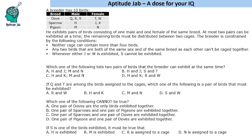Hello everyone, welcome to Aptitude Jab. This is a set based on selection. A breeder has 10 birds of three breeds, with male and female birds of each breed. He exhibits pairs of birds consisting of one male and one female of the same breed. At most two pairs can be exhibited at a time, so you can have one or two pairs exhibited.